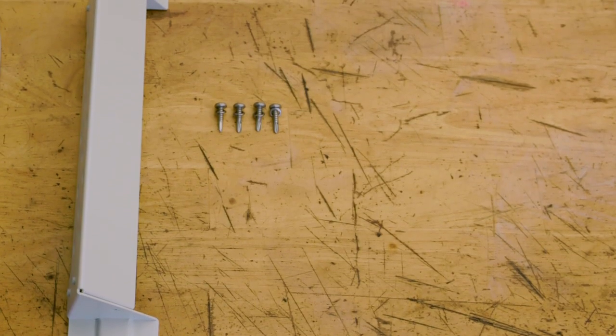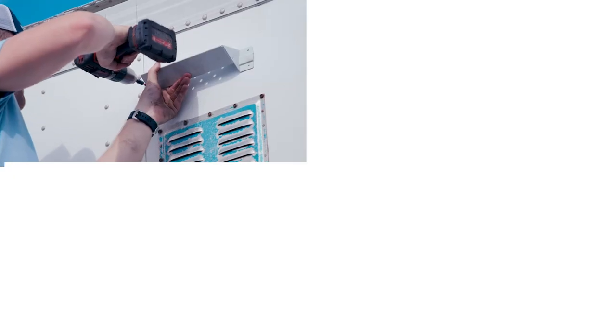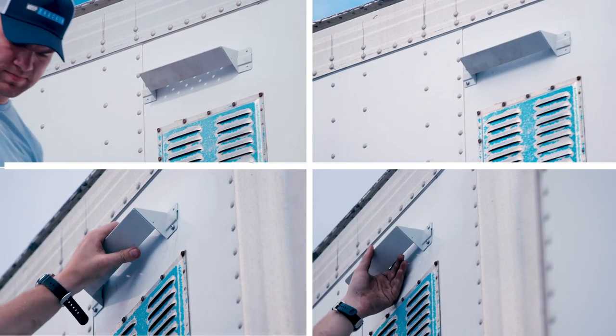Now get the solar mount and the self-tapping screws. Position the mount horizontally and drill in the four self-tapping screws in sequence.